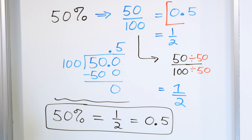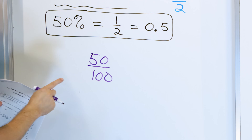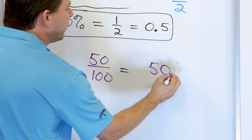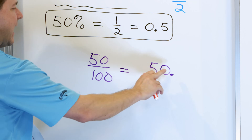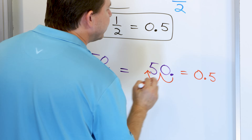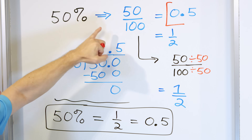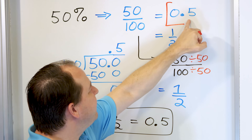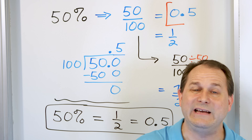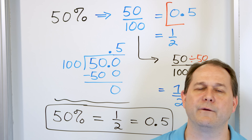I want to remind you that when you divide any number by 100, there's a much simpler way to do it. This 50 always has an invisible decimal point at the end — all numbers do. When you divide by 10, you move the decimal one spot to the left. When you divide by 100, you move the decimal two spots to the left. So 50 becomes 0.50, which is 0.5. Instead of doing long division, just move the decimal two spots to the left — that will always give you the decimal equivalent.